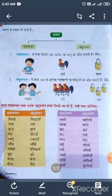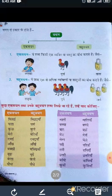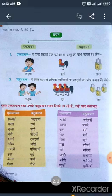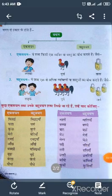मुर्गे — एक से ज़्यादा। ताले — इसमें भी एक से ज़्यादा। जिससे एक से अधिक व्यक्ति, वस्तु, स्थान आदि का बोध हो, उसे बहुवचन कहते हैं। कुछ एक वचन तथा उनके बहुवचन शब्द लिखे जा रहे हैं।